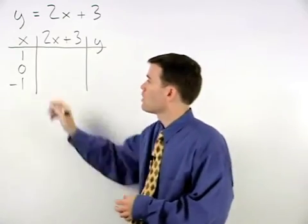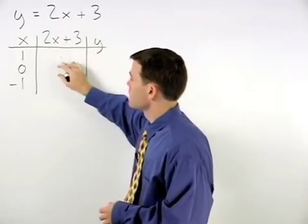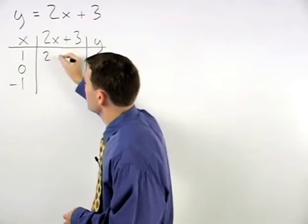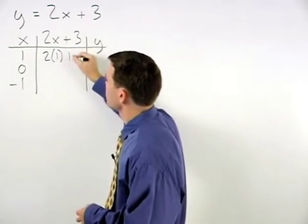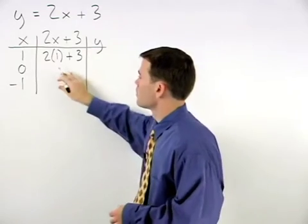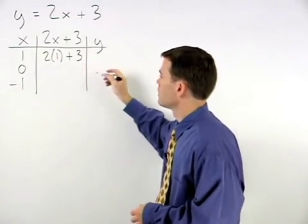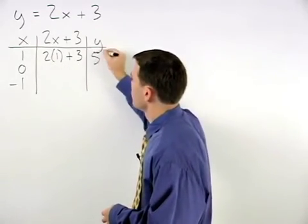So plugging a 1 into the equation for x, we have 2 times 1 plus 3, or 2 plus 3, which is 5.